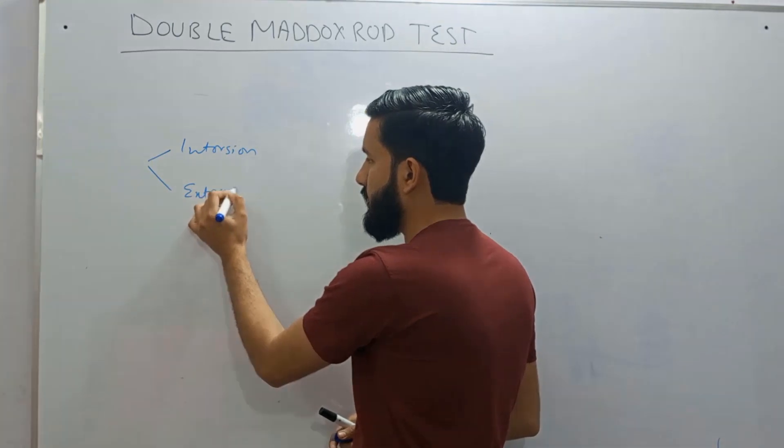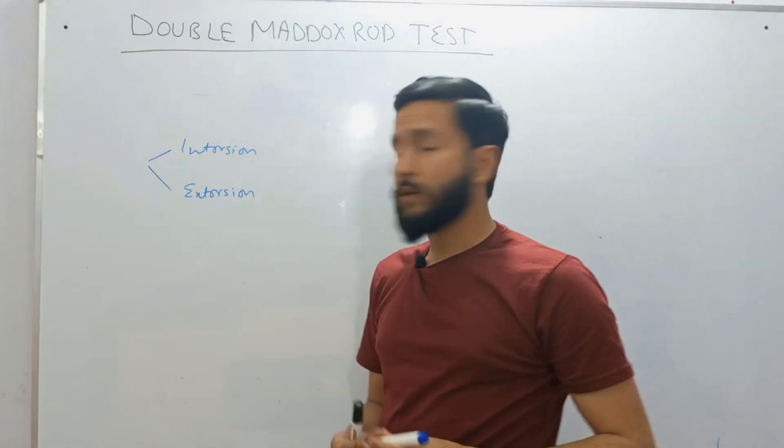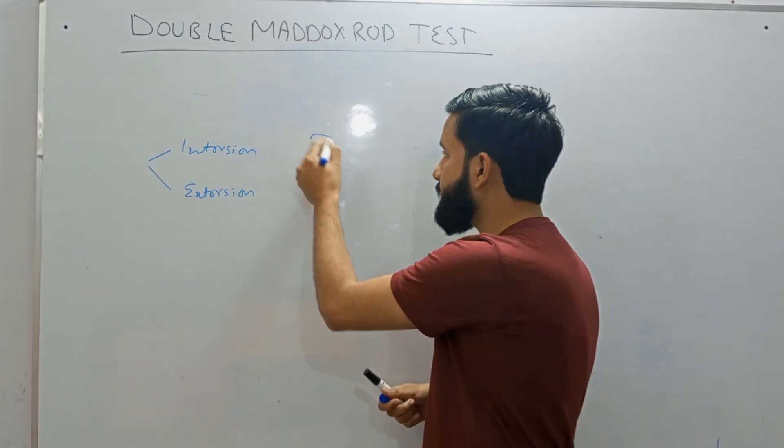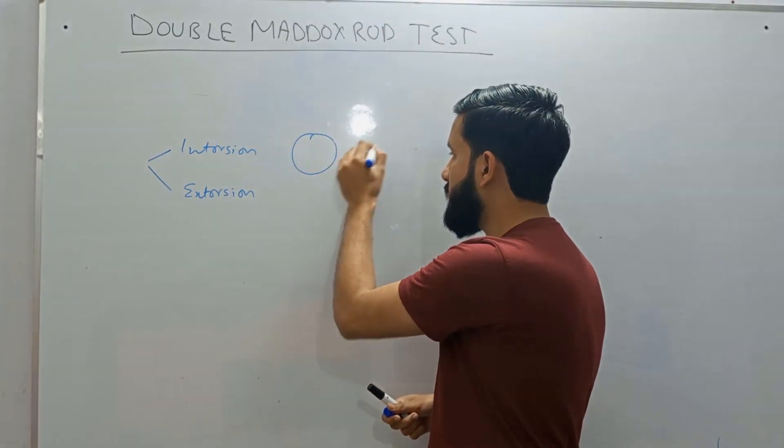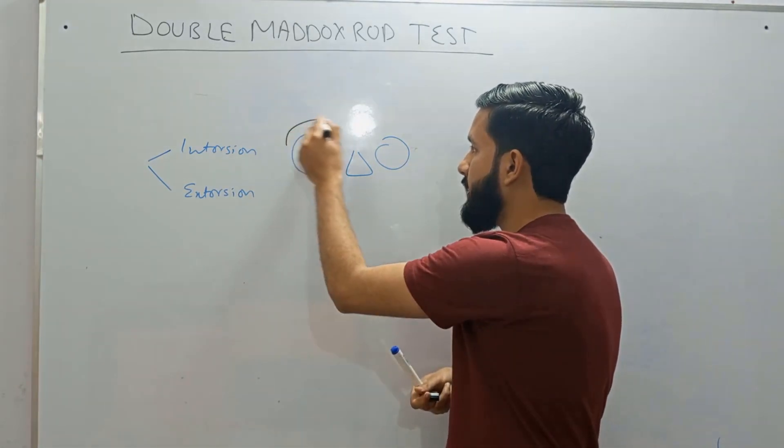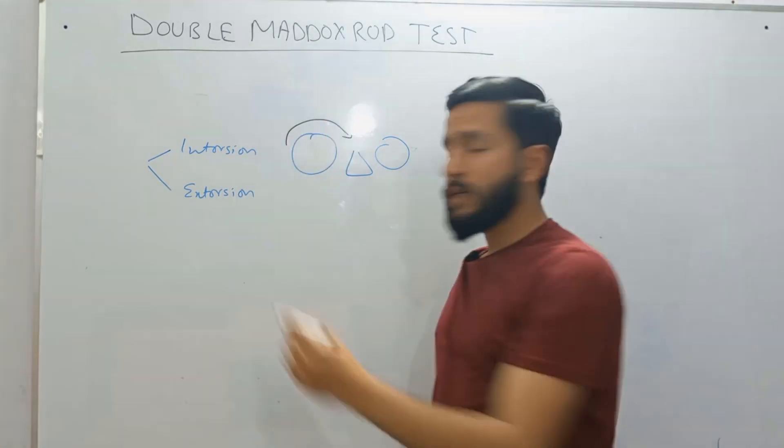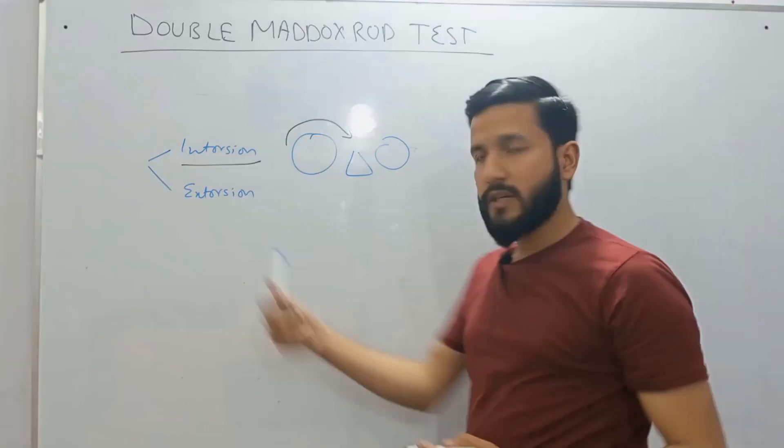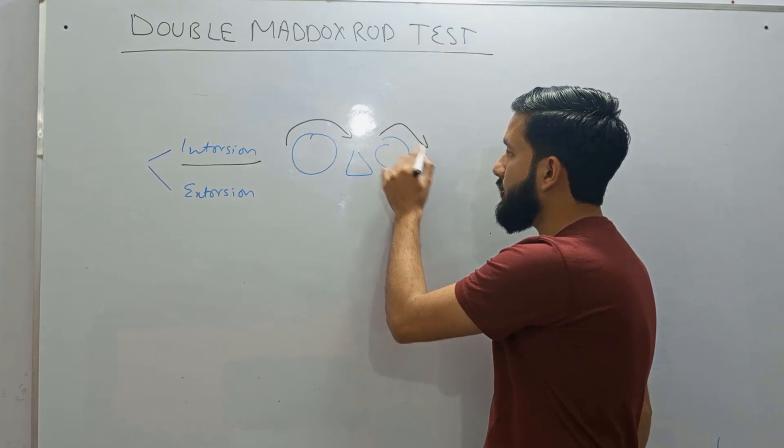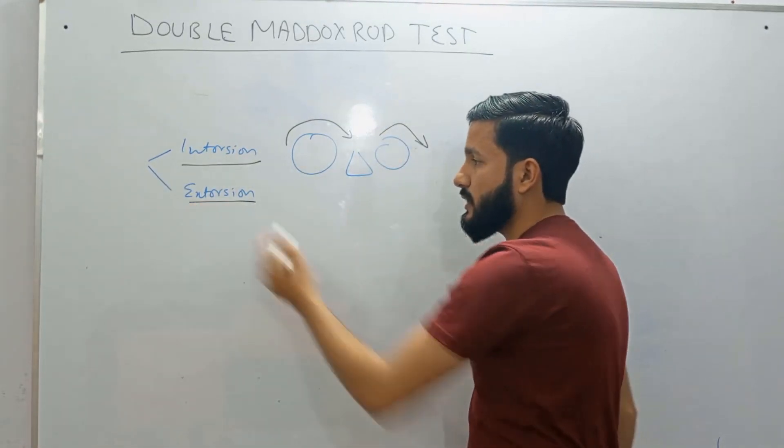Intorsion and extorsion. Intorsion is a situation in which the eye moves up and inwards like this. If this is your nose the eye will move up and inward. This is known as intorsion and in extorsion the eye will move up and outwards. This is known as extorsion.